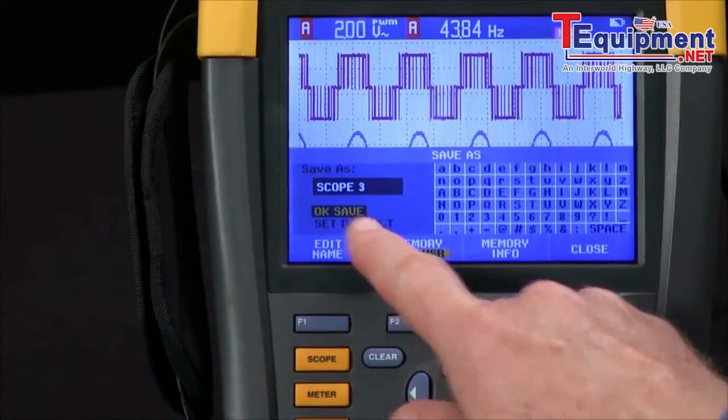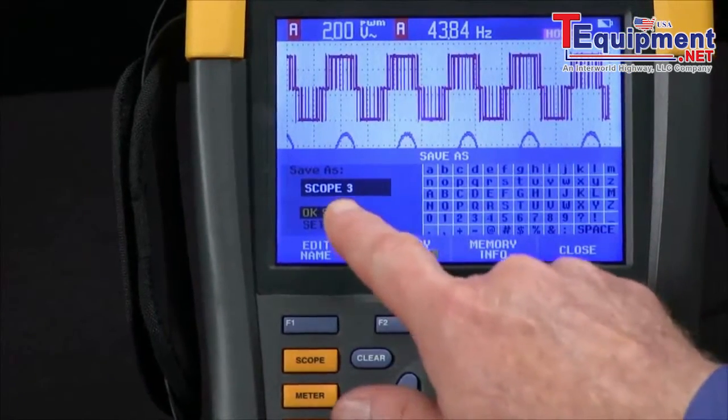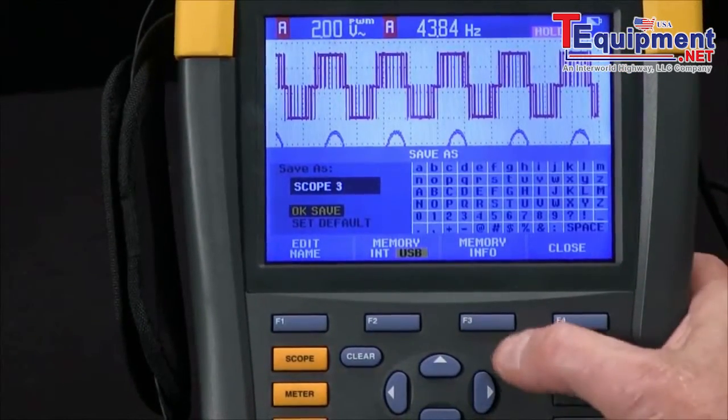We can create a name if we want to using the alphanumeric keypad over here, or just save as scope 3. I'll hit the Enter key for that.